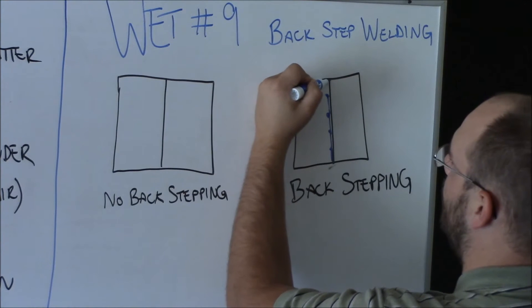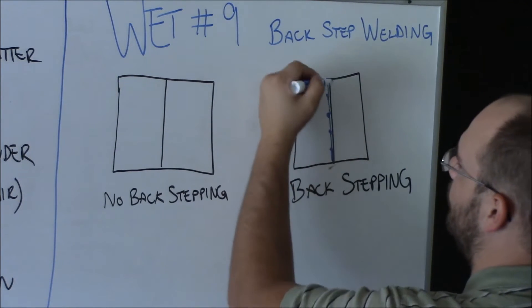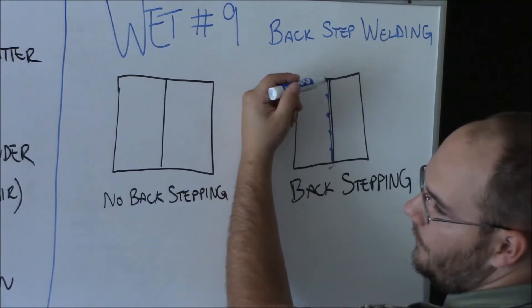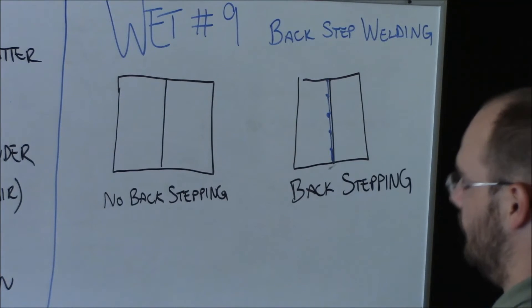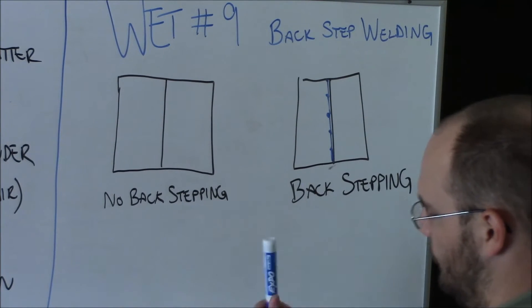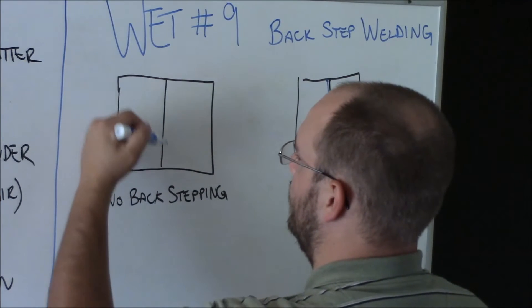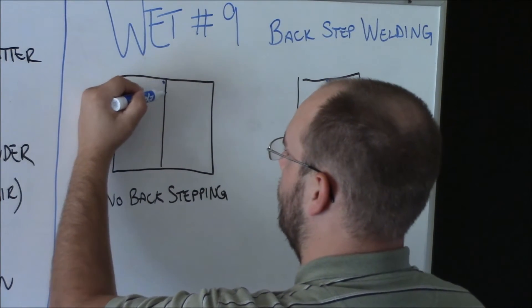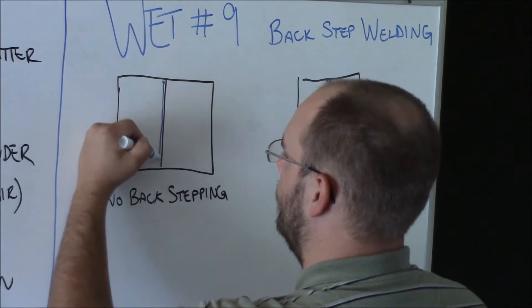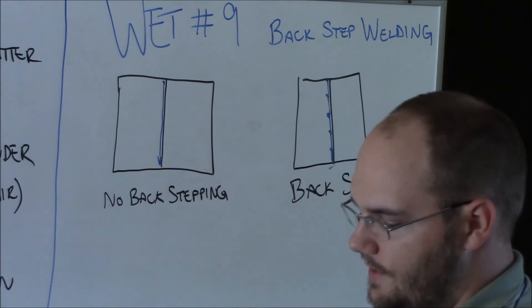So the idea is that you're taking a step backwards in comparison to the direction that you're welding. Versus where typically, if you have no backstepping, you may just start and weld straight through like that.